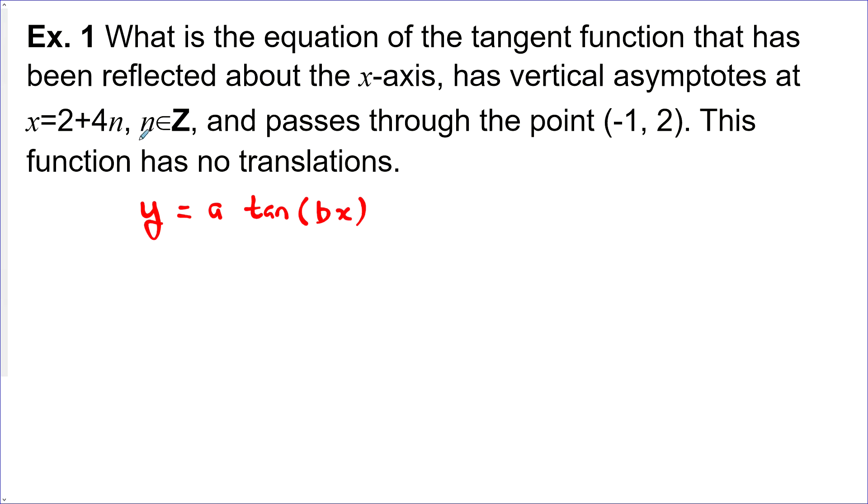From this equation right here for the vertical asymptotes, we can actually see that our period would be 4 units. And we can see that because every 4 units, we're going to have another vertical asymptote and restart the process.